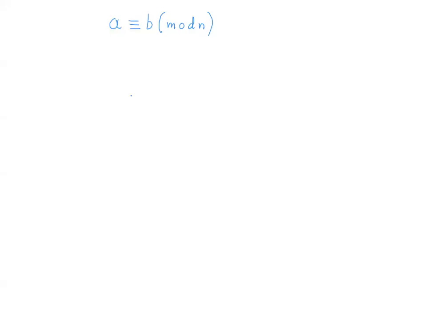We would like to explain what a being congruent to b mod n means, in general, what congruence is between integer numbers. So let's start with a little bit of notation.